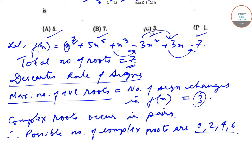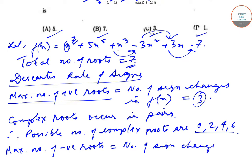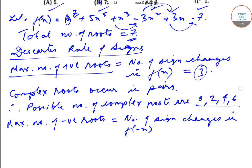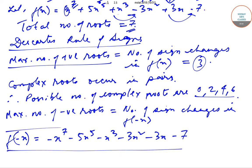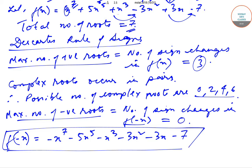Now let us find out the maximum number of negative roots. The maximum number of negative roots is given by the number of sign changes in f(-x). f(-x) = -x^7 - 5x^5 - x^3 - 3x^2 - 3x - 7. As you can see, there is no sign change — all terms are negative — so the maximum number of negative roots is equal to 0.